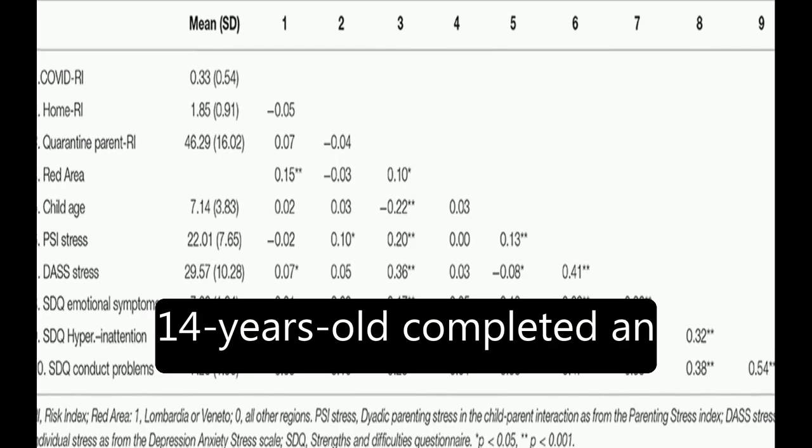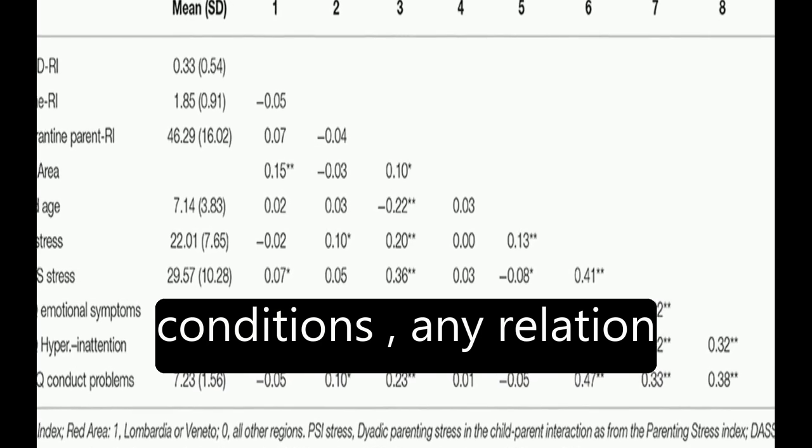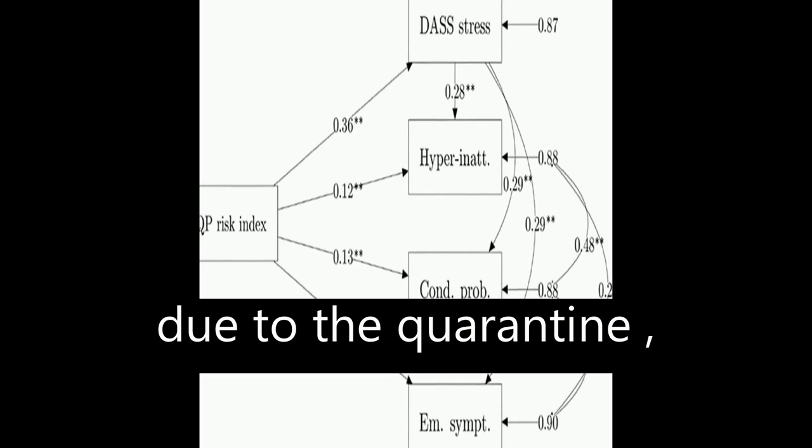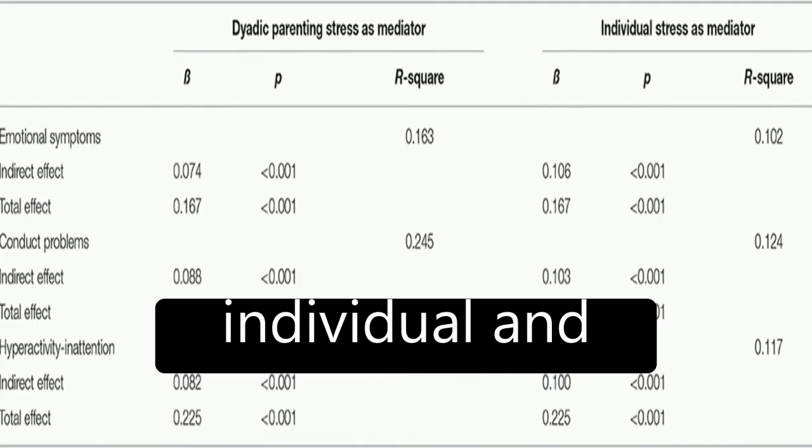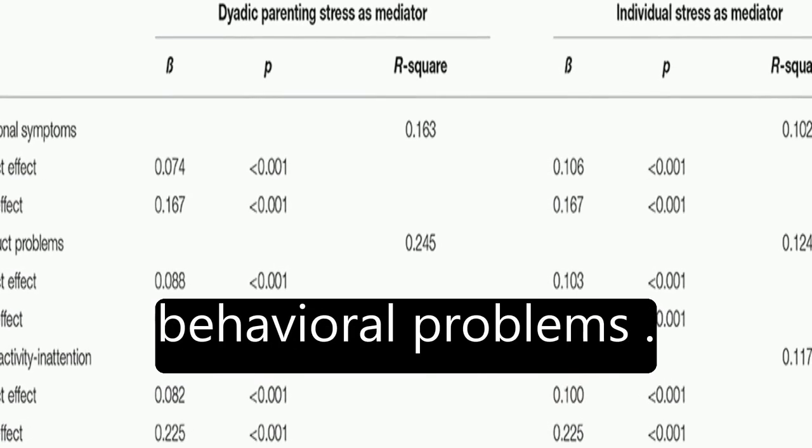Parents of children aged between 2 and 14 years old completed an online survey reporting their home environment conditions, any relation they had to the pandemic consequences, their difficulties experienced due to the quarantine, their perception of individual and parent-child dyadic stress, and their children's emotional and behavioral problems.